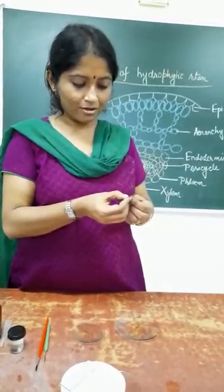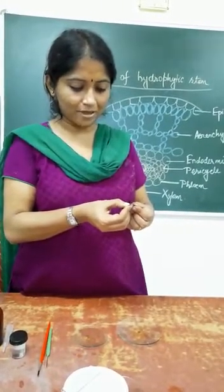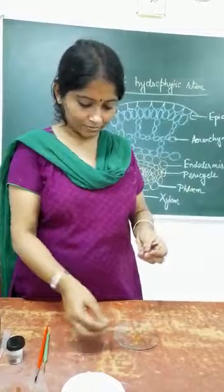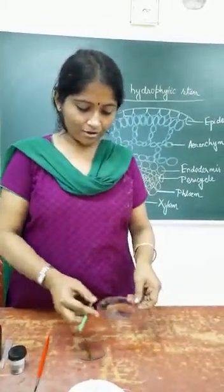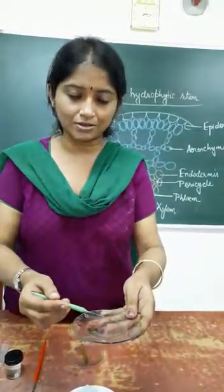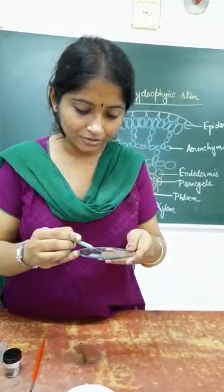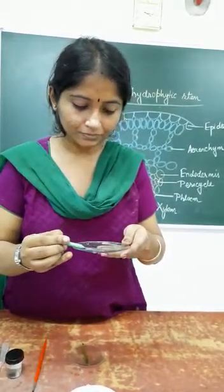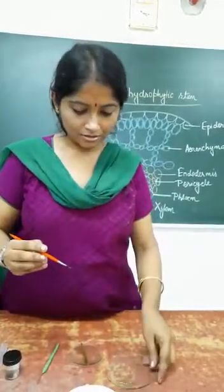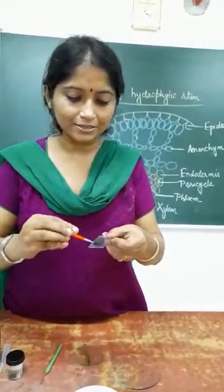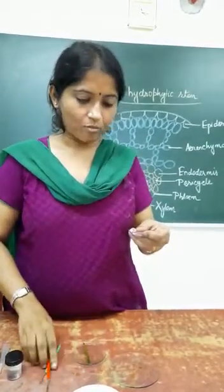The thin sections will be placed in the watch glass with water. I will make a few such sections so that I can select the best one. From the sections here, I will select the thinnest section and keep it on a clean slide. Add a drop of water.